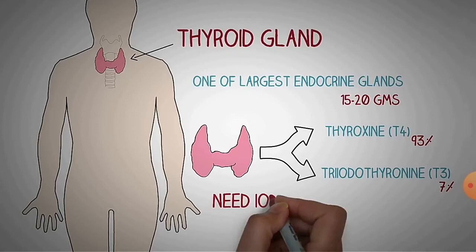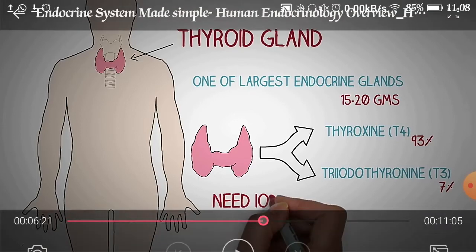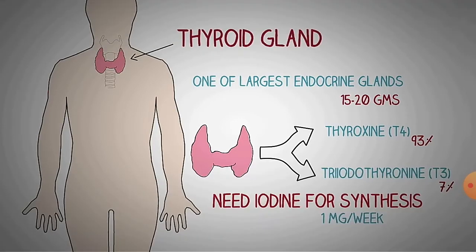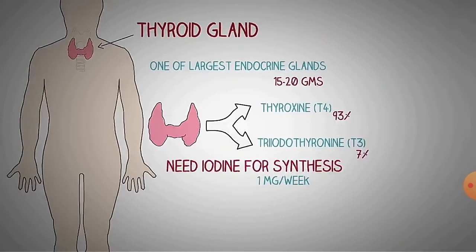Although thyroxine is 93%, interconversion occurs from T4 to T3. This maintains the levels of thyroxine and T3 depending on requirement: if there is more T4, it converts to T3; when T4 is less, it remains as is and is utilized in the body. Iodine is needed for this synthesis — almost 1 mg per week. That relatively small amount of iodine is required for the process of thyroxine production.